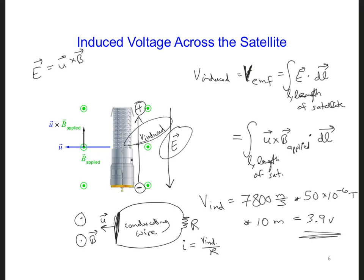Take out your in-class project notebooks and make a note about how an induced EMF is set up across the satellite as it moves in the Earth's magnetic field. Make sure to describe both the Lorentz and the Coulomb forces felt by the electrons on the satellite.